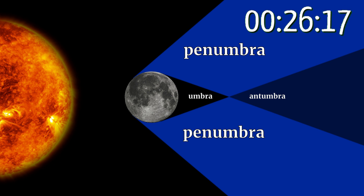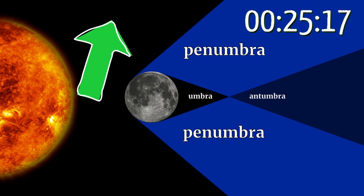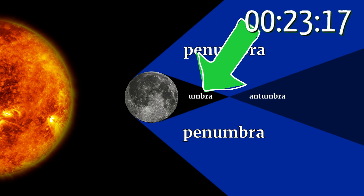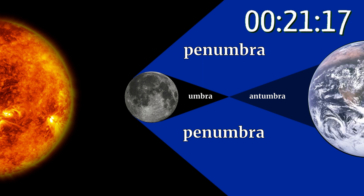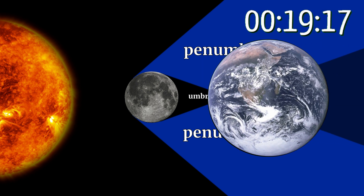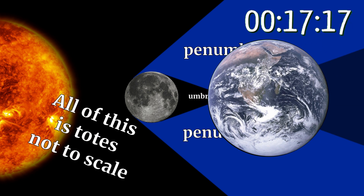Mapping out all the points into brightly lit, penumbra, and umbra gives this cone shape. If you slide Earth in here, you can see why the shadow or umbra is smaller than the Moon.